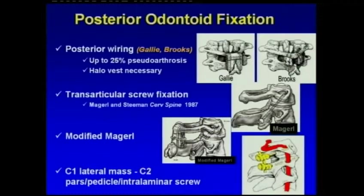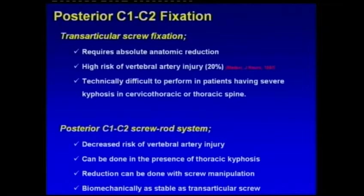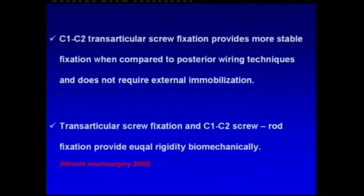There are several posterior fixation techniques for odontoid fractures: posterior wiring, transarticular, and modified Magerl C1-C2 screw-rod technique. C1-C2 transarticular screw fixation is more stable when compared to posterior wiring technique. Transarticular screw fixation and C1-C2 screw-rod fixation provide equal rigidity biomechanically.